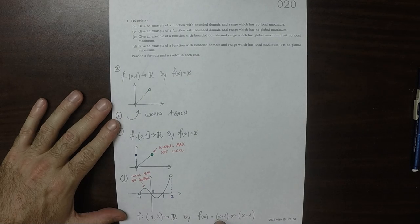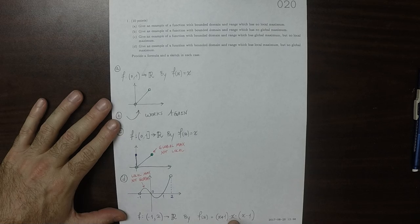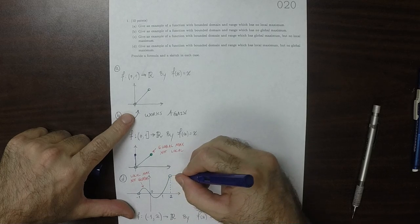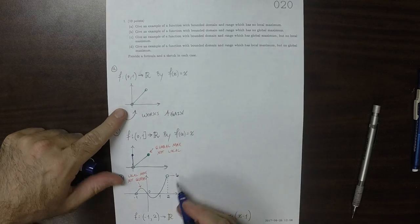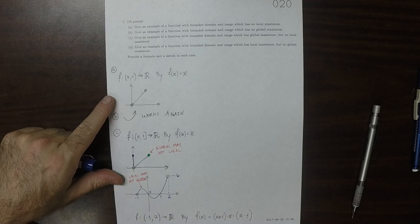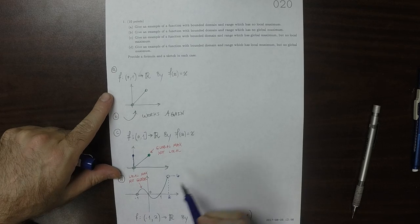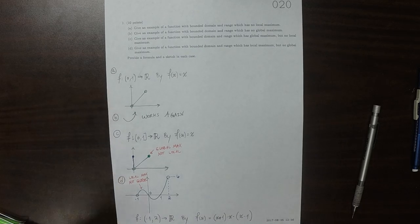So that would be three times two is six, times one. So that would be up there at six. So that's higher than that one. And therefore, this is a local max that's not global. And that is not a global max because it's not a point.